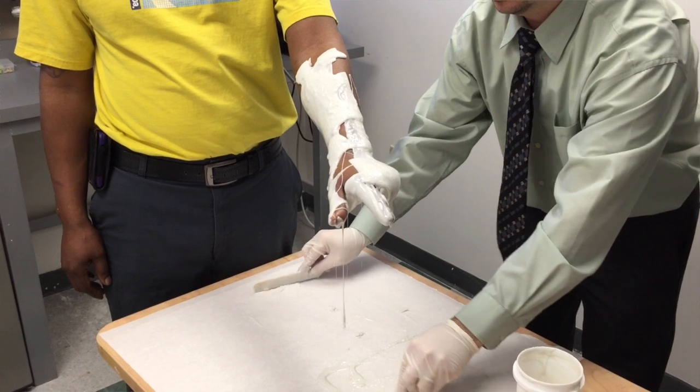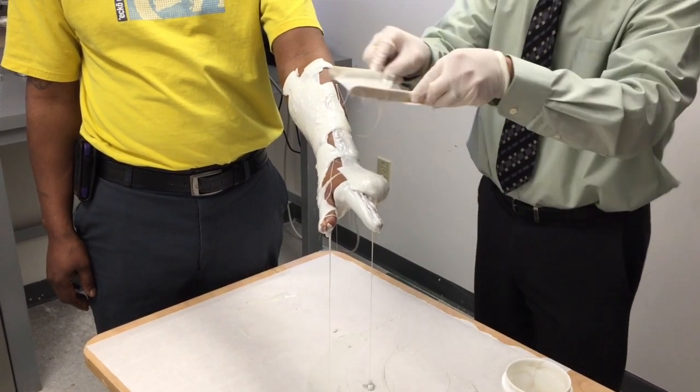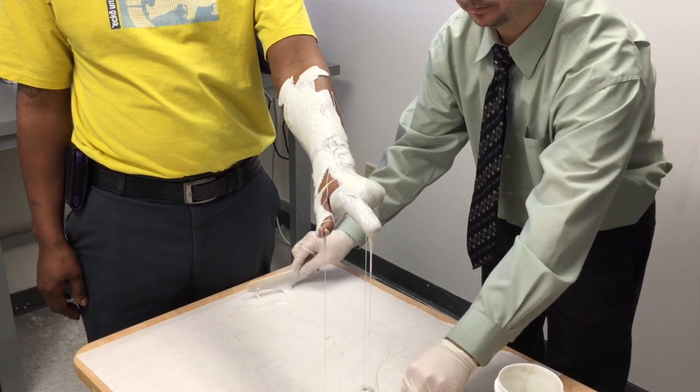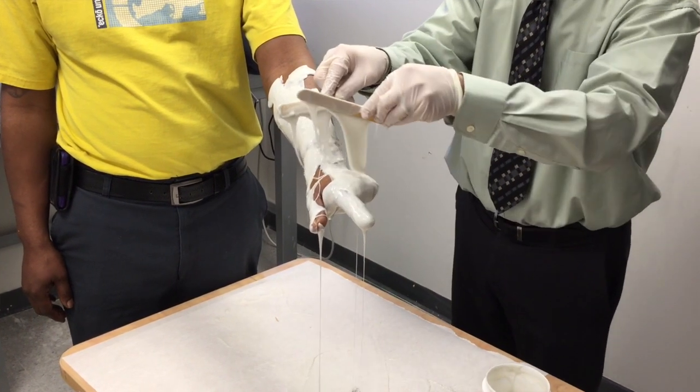You don't have to have it really thick, you just have to have full coverage of the skin. So just spreading those tongue depressors apart to apply as much as possible that has dropped down to the table.